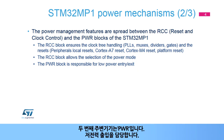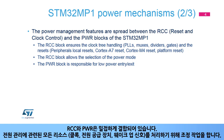The second peripheral is the PWR. It is responsible for low power entry and exit. The RCC and PWR are tightly coupled. They work in coordination to handle all the resources involved in power management: clocks, power supplies, and wake-up signals.